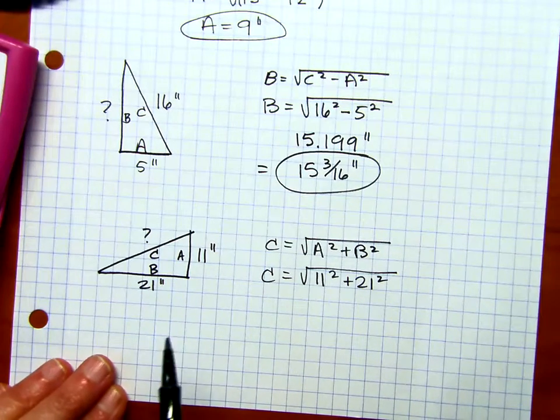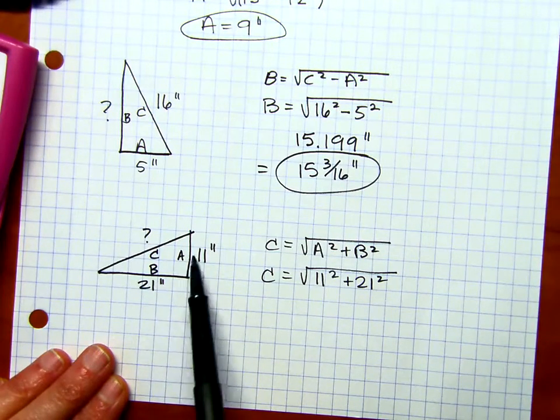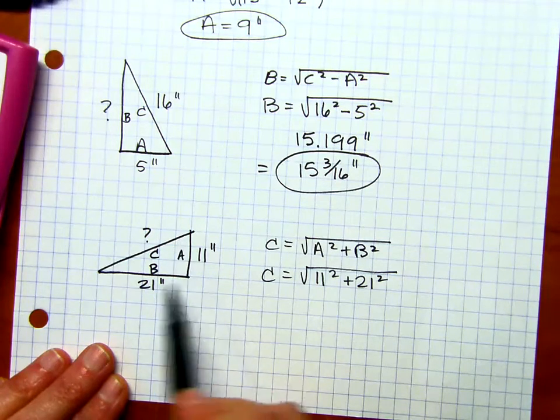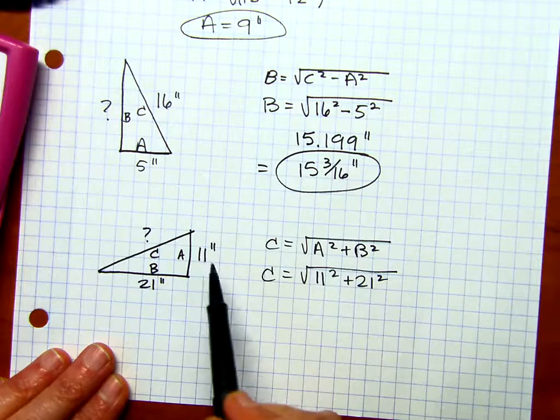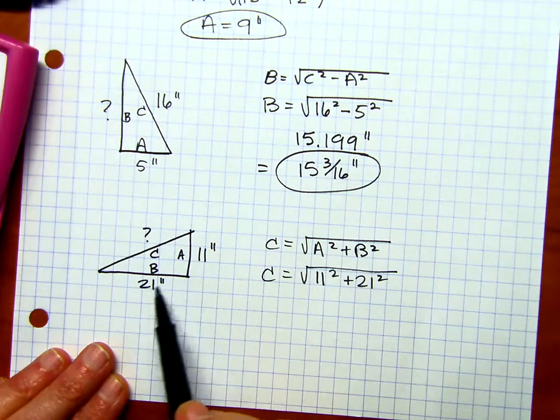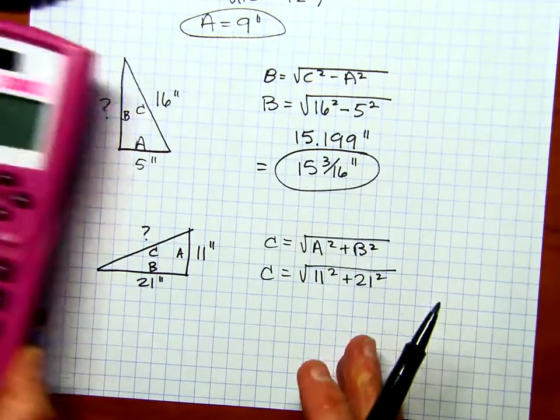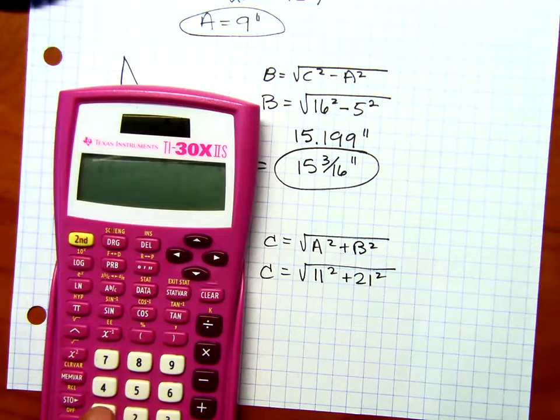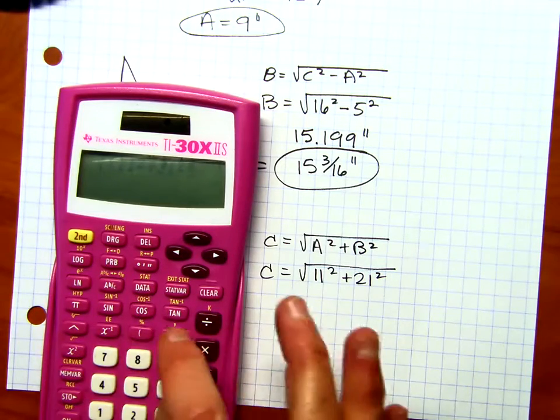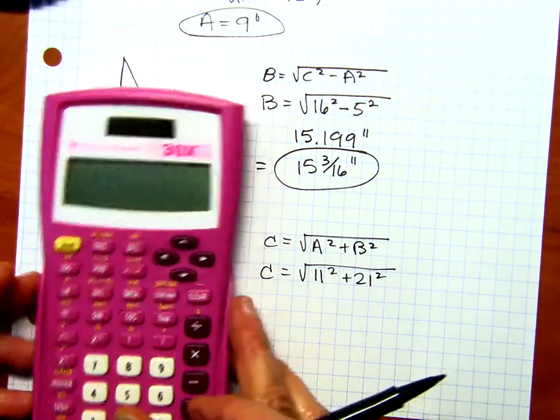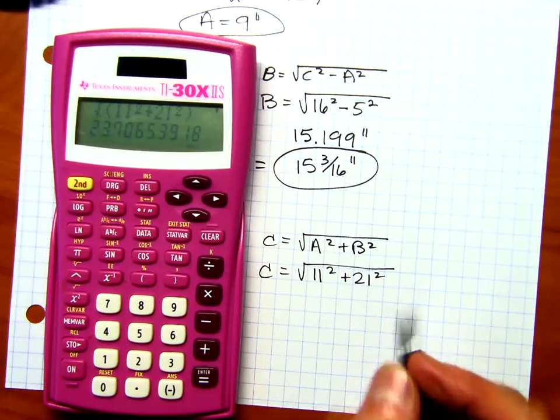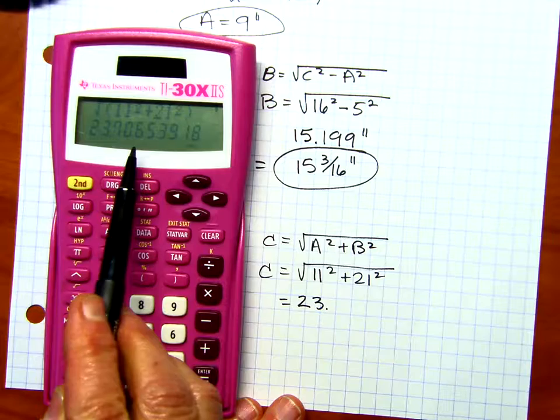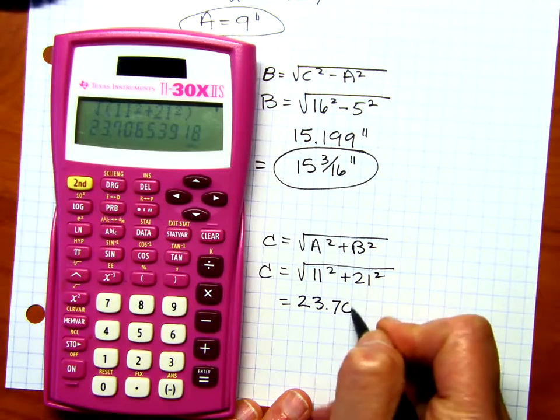11 squared plus 21 squared. Now, I just want to make a little note here. A and B are basically interchangeable. So if I don't give you specifically what A and B is, but just have a picture, and it's obvious that the hypotenuse is C, then these two could potentially be interchanged. It won't make a difference in your calculation. So now we're going to use the calculator. Let's go ahead and clear. Square root, 11 squared plus 21 squared. Notice that that was an addition problem and not subtraction like the last problems.